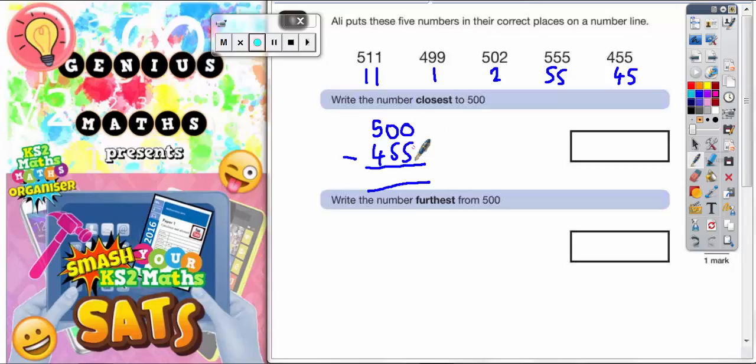So 0 take away 5, you can't do. So you need to borrow from this 0 here. But you can't borrow from 0 because there's nothing there. So you need to go to the next column, which is the 5, and borrow from there instead.